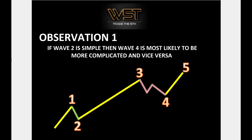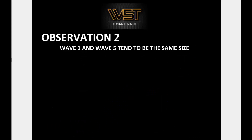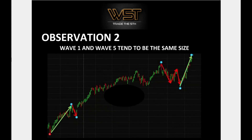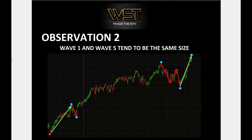Observation two: wave one and wave five tend to be the same size. This is used as part of the programming for our automated target zones for the fifth wave — not the only factor, but one key observation. On this chart, from the C wave down at the bottom left, the green arrow forms wave one. You've got a simple wave two, a complex wave four, and the fifth wave is pretty much the same size as wave one — a typical five-wave move.